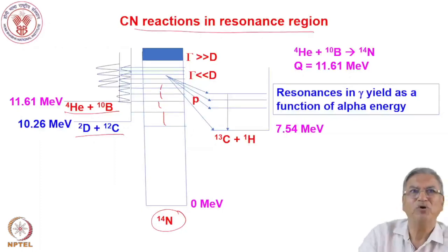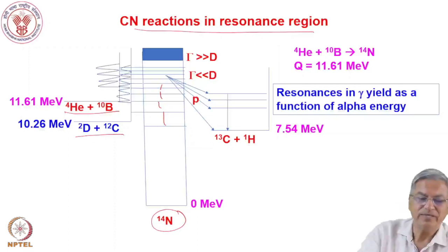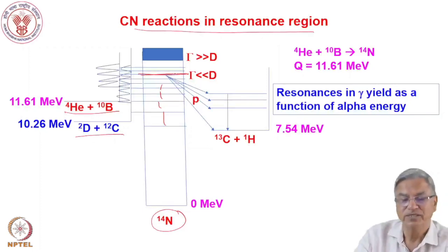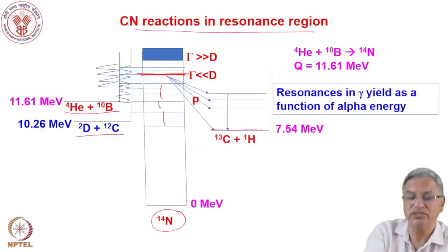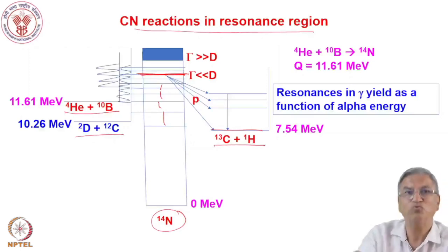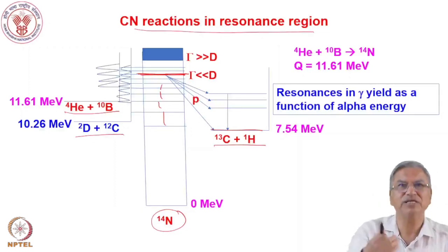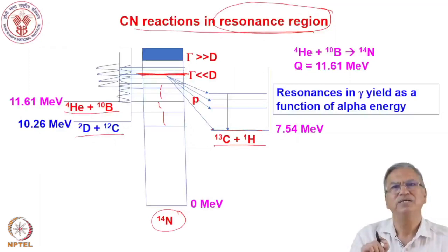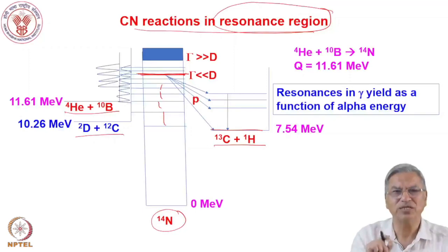When a compound nucleus is populated in discrete, well-separated excited states, the subsequent decay is governed by the width of that level and the available states in the product nucleus. For example, it can emit a proton to form carbon-13. When a compound nucleus is populated in discrete states, we call it the resonance region — meaning there are resonances in the cross-section whenever a particular energy state of the compound nucleus is populated.